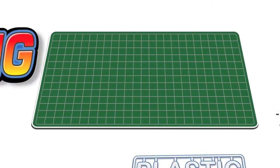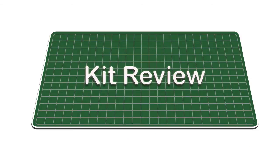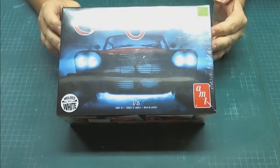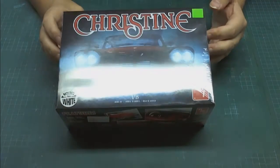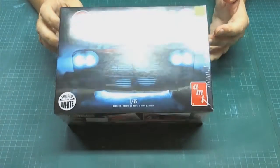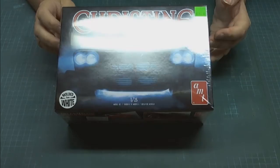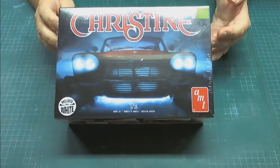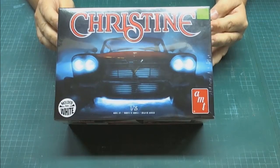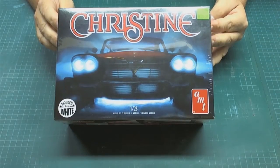So look what we got today, we picked up Christine. This retails for $25.99 at my local hobby store. This is the movie car, AMT 1/25th scale, a 1958 Plymouth Belvedere which was converted into another vehicle during the movie.